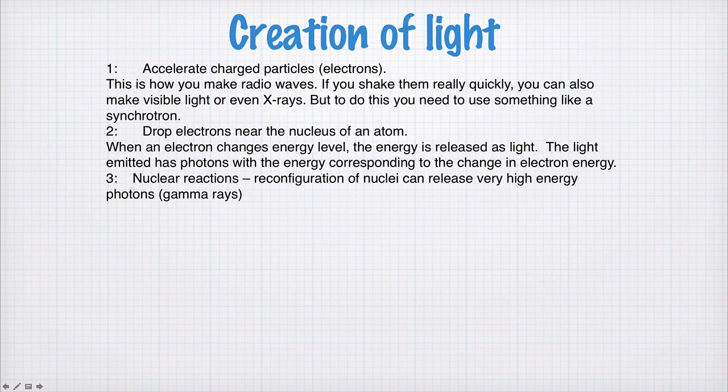A third way of doing it is kind of the same as moving electrons near the nucleus of an atom, but it's rather moving the contents of the nucleus around. So if you reconfigure the innards of an atomic nucleus, you can also release very high energy photons or gamma rays. So nuclear reactions, in other words, can release electromagnetic radiation.